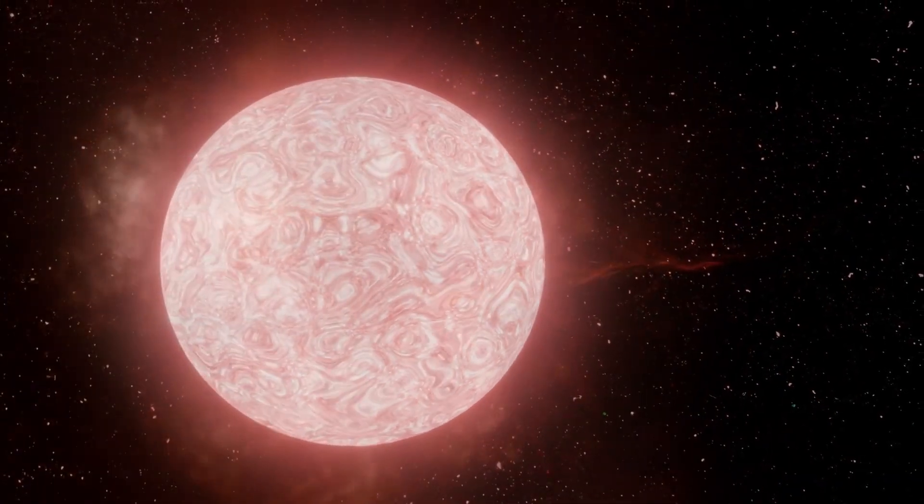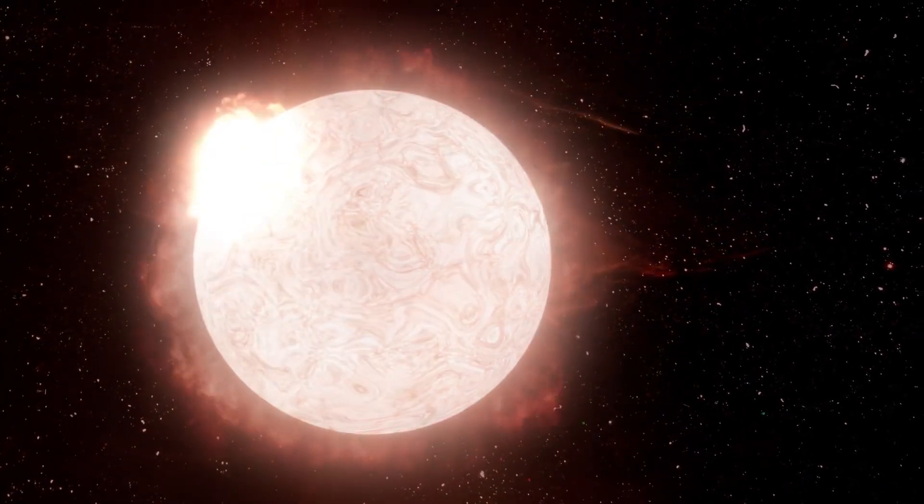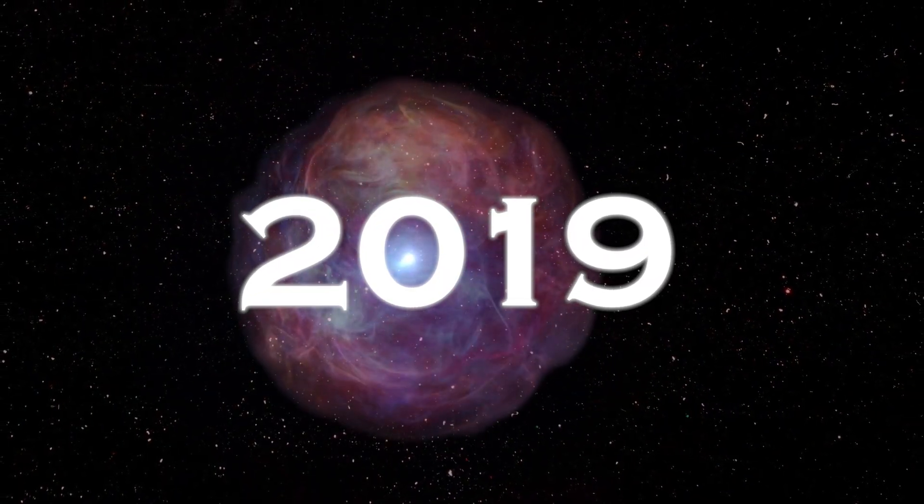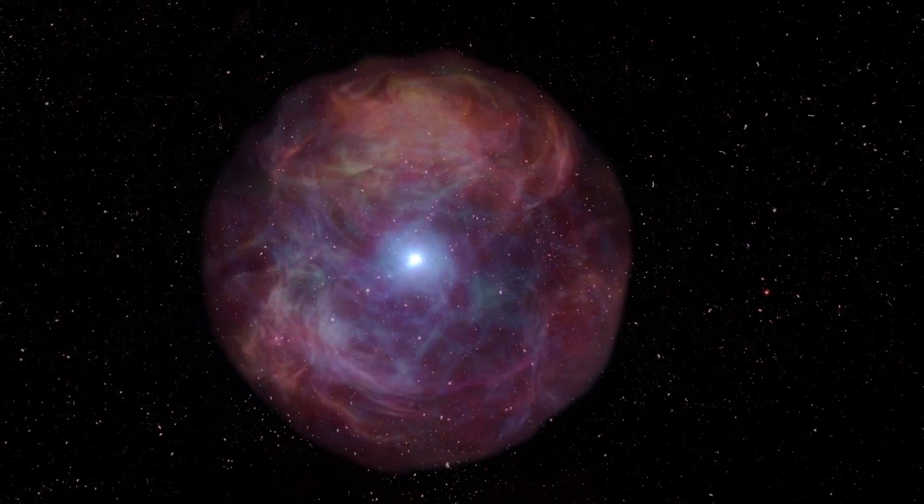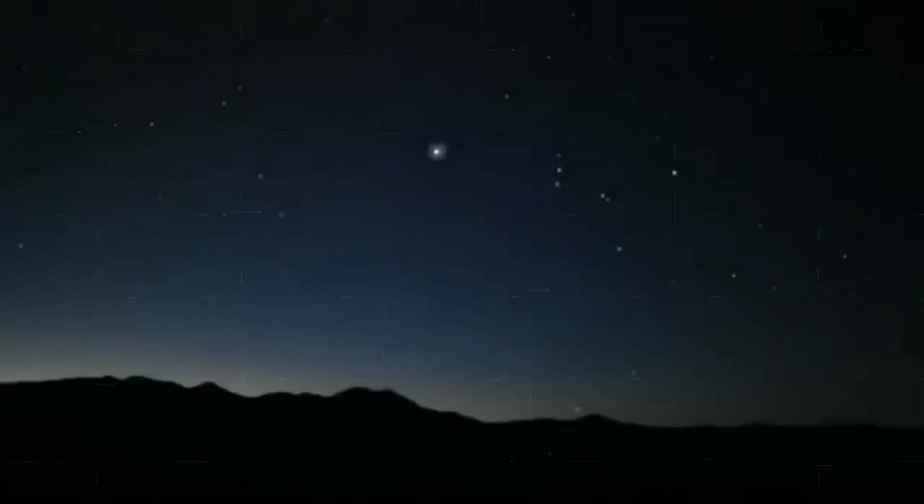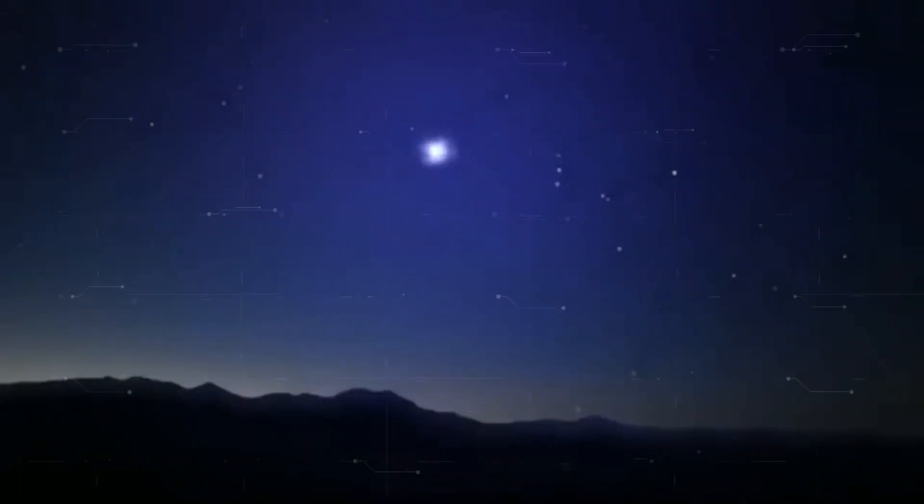Betelgeuse is a red supergiant star nearing the end of its cycle. Surprisingly, in 2019, one of the brightest stars in the sky began to fade noticeably, being visible even to the naked eye.